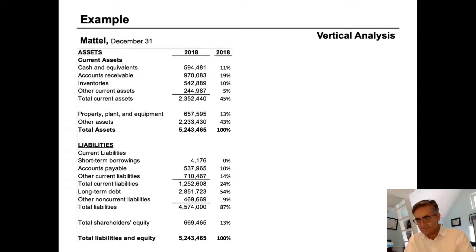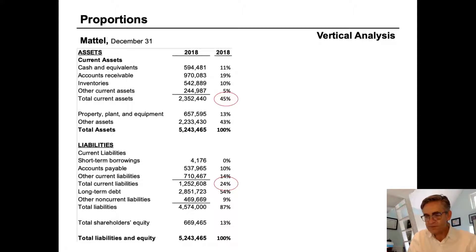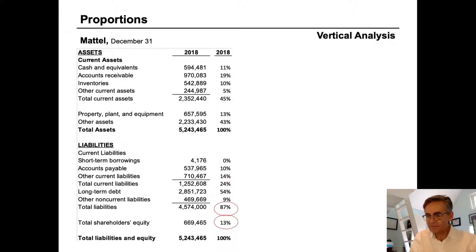So what does this tell us? First, we can immediately see some important relationships that maybe were not so obvious when we were just looking at the raw numbers. For example, we can see that current assets are 45% of total assets, which means that of all the things that Mattel owns, nearly half of it is expected to be consumed within a year. We can compare this with the percentage of current liabilities at 24% and see that Mattel had nearly twice as much in current assets as it did in current liabilities. Another strong relationship is the amount of debt relative to equity — total liabilities are 87% of assets while shareholders' equity is 13%.